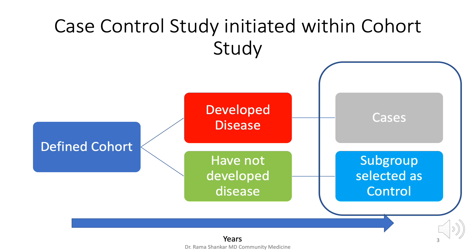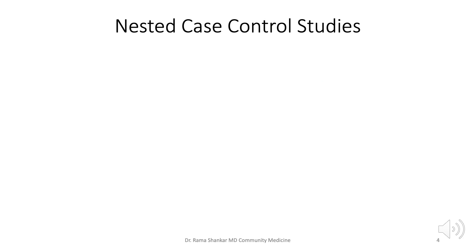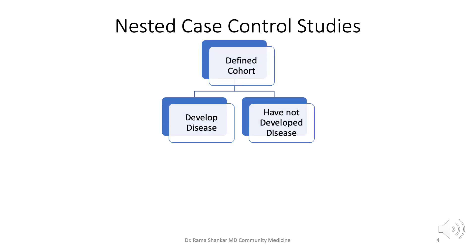The first type is the nested case-control study, which we are discussing now, and the second is the case-cohort study. In the nested case-control study, controls are taken from a sample who have not developed the disease but are at risk.